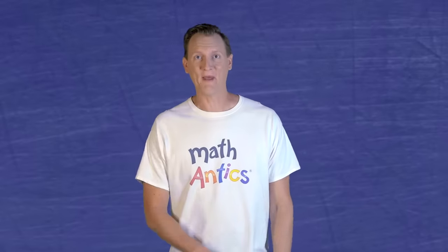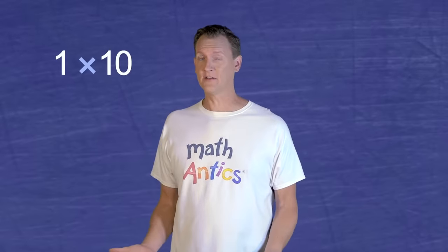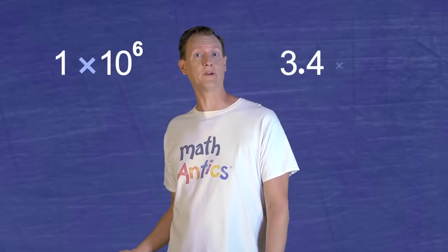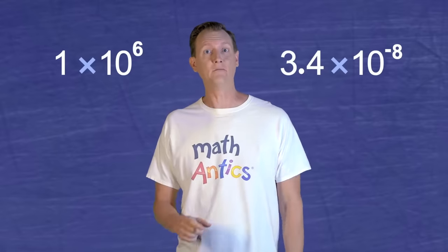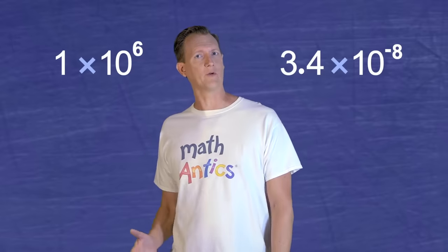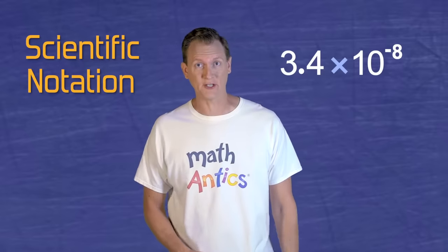Hi, I'm Rob. Welcome to Math Antics. Have you ever heard people use numbers like that? 1 times 10 to the 6th? Or maybe 3.4 times 10 to the negative 8th? Well, those are examples of a way of writing numbers called scientific notation.